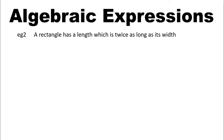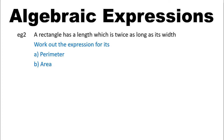Let's try another example. A rectangle has a length which is twice as long as its width. Work out the expression for its perimeter and area. For any type of question like this, I always like to have a diagram. So if they don't give you a diagram, you should sketch your own. If they do give you a diagram, you should copy it so that you can fill in the missing information.